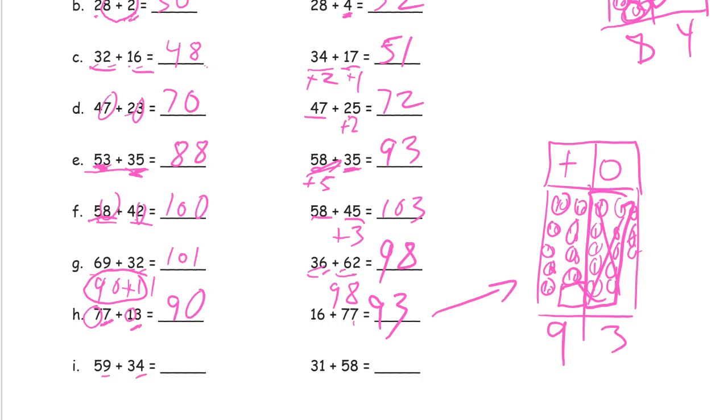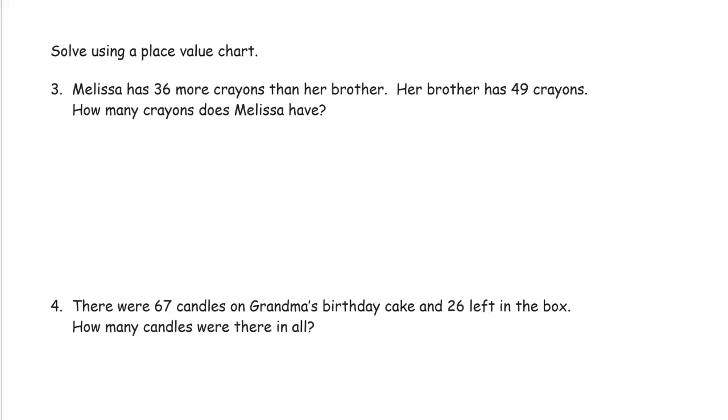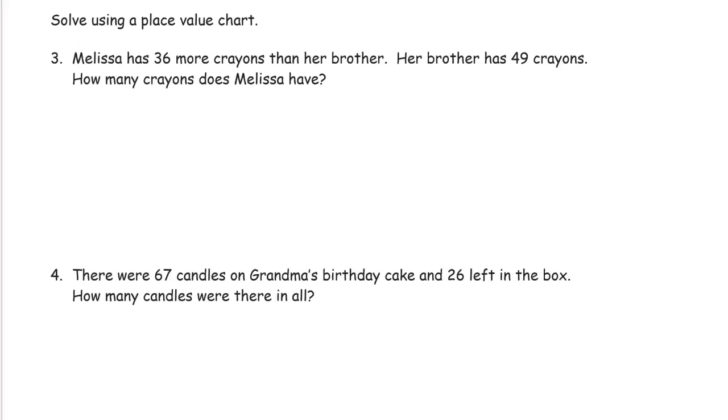Fifty-nine and 34: looking at the ones place, nine and four more gives 13 ones. Your tens are five and three, that's eight tens. So you have 80 plus 13. You'll bundle ten ones to make 90, with three ones left over: 93. For 31 and 58: eight ones and one one is nine ones, and three plus five is eight tens, so 89.